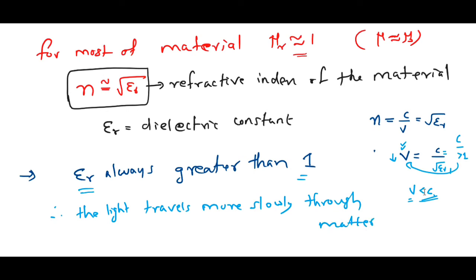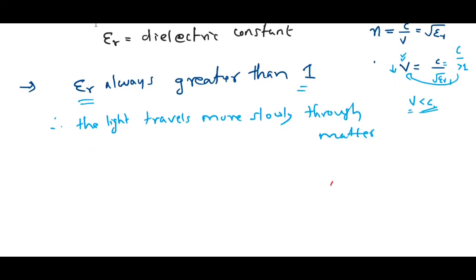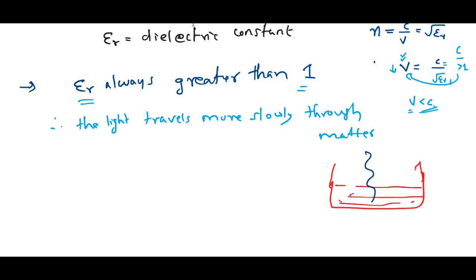This is a well-known fact in optics. If you have a beaker filled with water and light travels from air into the water, the velocity of light in air will be larger and the velocity of light in water will be smaller. The electromagnetic wave always travels through matter with lesser velocity than in vacuum or air.